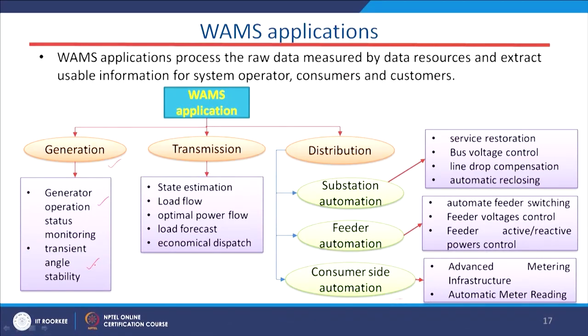In the case of generating stations, we have different stability issues: voltage stability, angle stability, and frequency stability. Keeping those in mind, different types of stability issues can also be monitored using this WORMS structure.